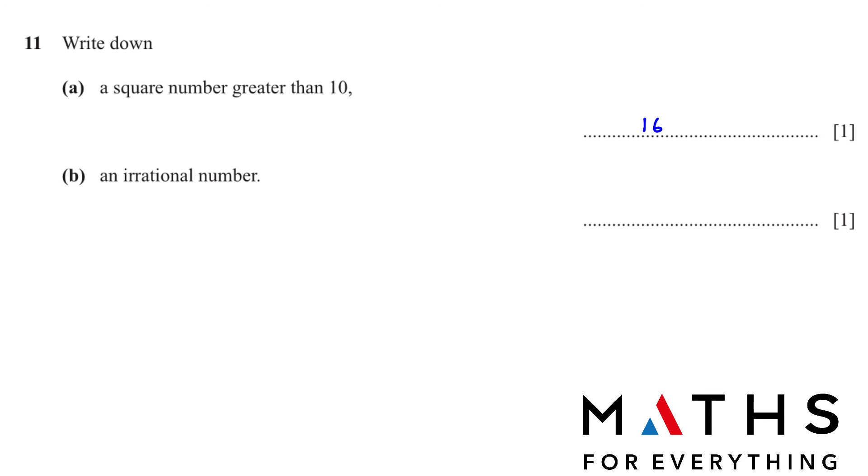An irrational number. Irrational number is a number that cannot be written as a fraction. Any prime number that you have, you can write it as a root that is an irrational prime number. Irrational number, sorry. So square root 5, square root 2. We also made a video on different types of numbers. You can watch that.